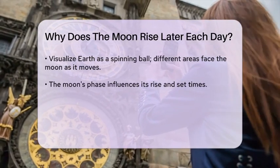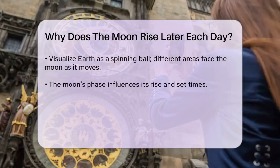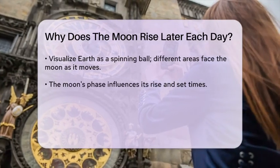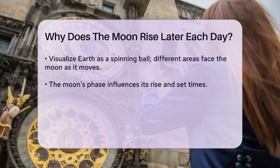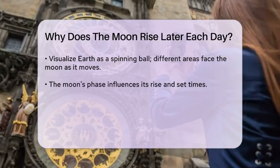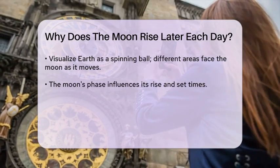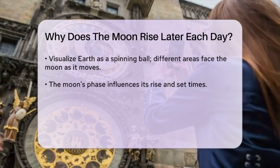This extra rotation time is why we see the moon rising later each day. Additionally, the moon's position relative to the sun and its phase also affect when it rises and sets. For example, during a full moon, the moon is opposite the sun in the sky, so it rises as the sun sets and sets as the sun rises.